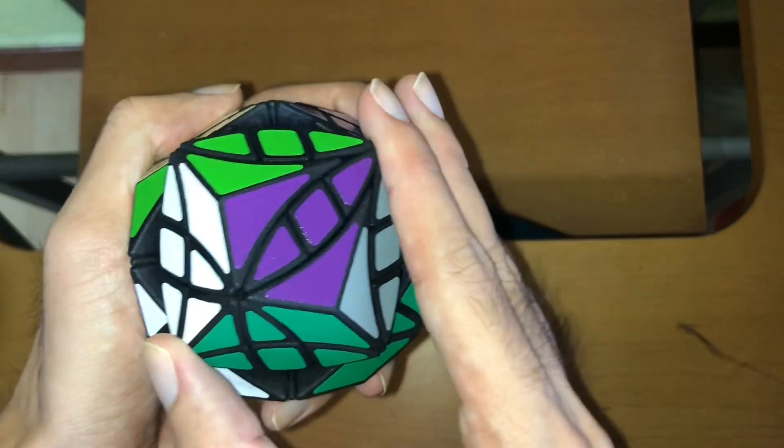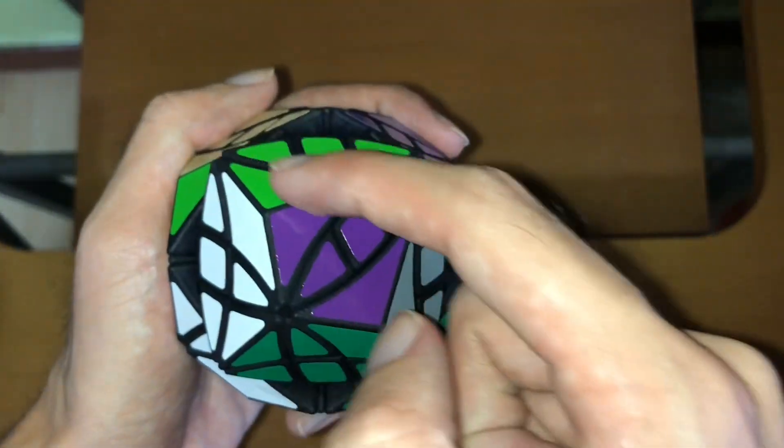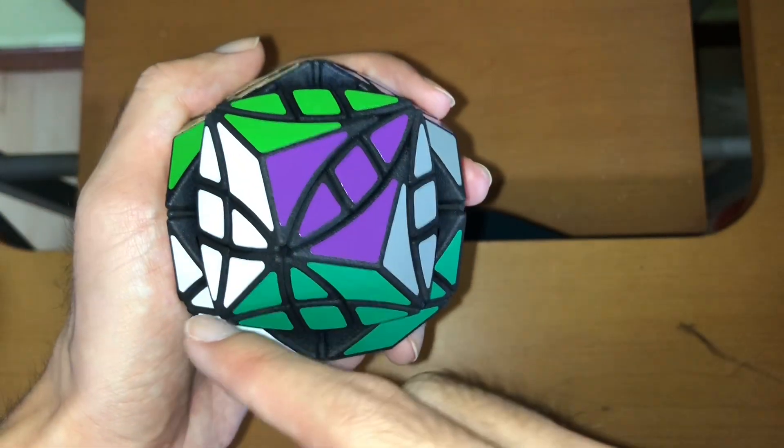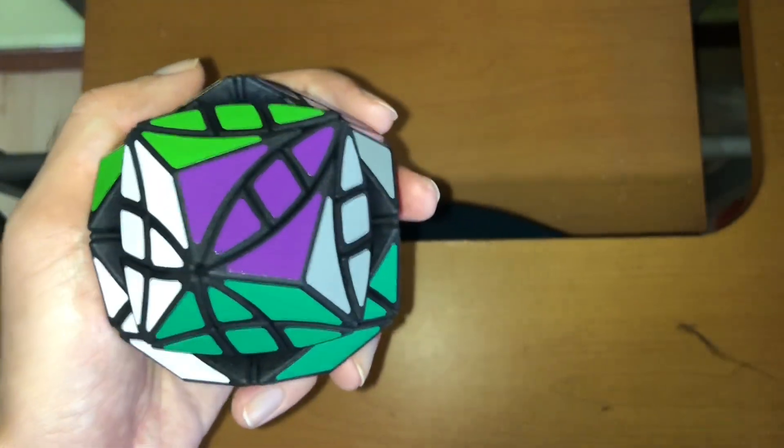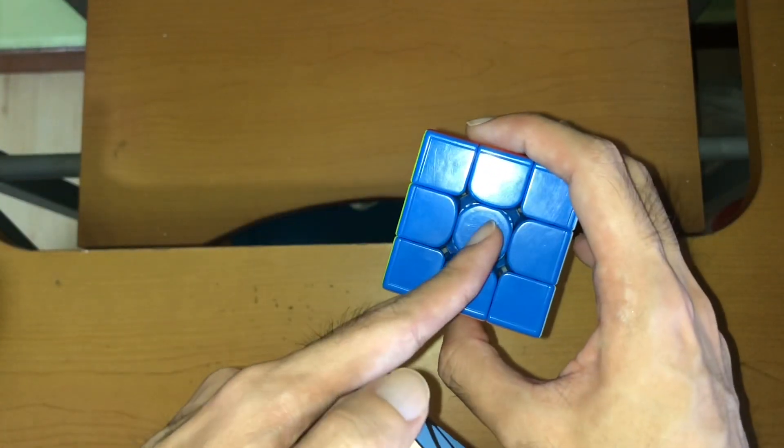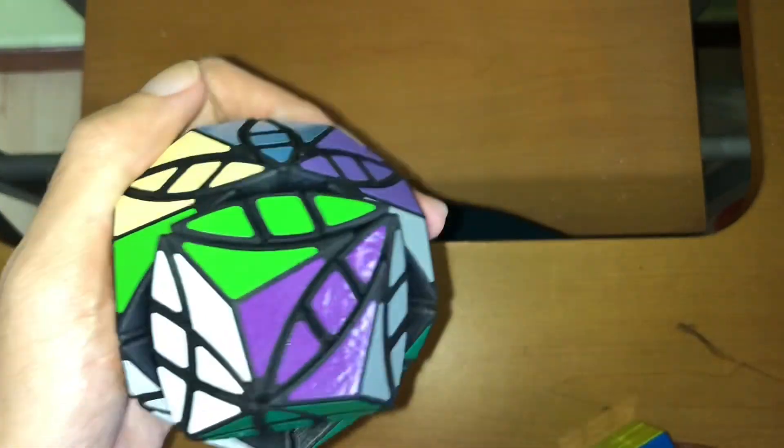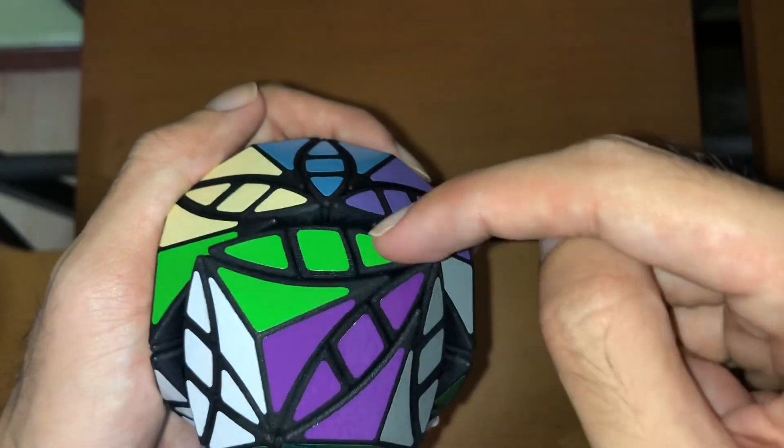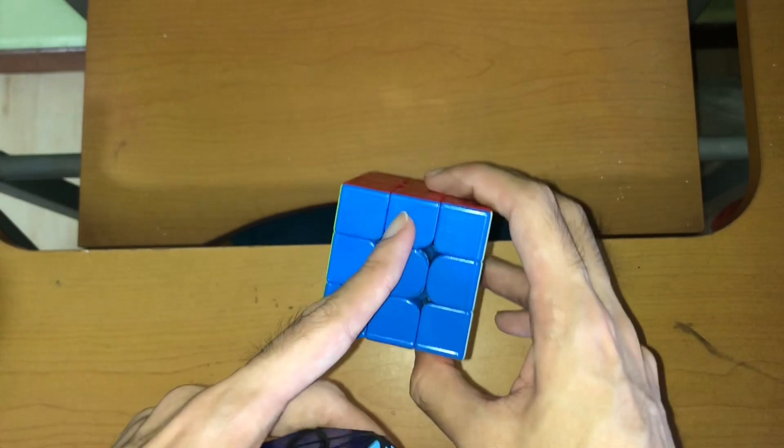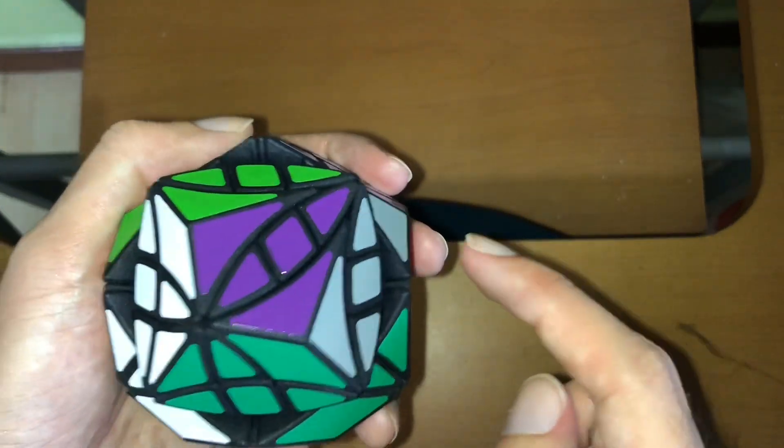When I turn the puzzle slightly, you can see this roughly square-shaped group of pieces in the middle. That corresponds to a centerpiece on a 3x3. And these groups of three pieces correspond to edge pieces on a 3x3. And again, there are no corner pieces here.